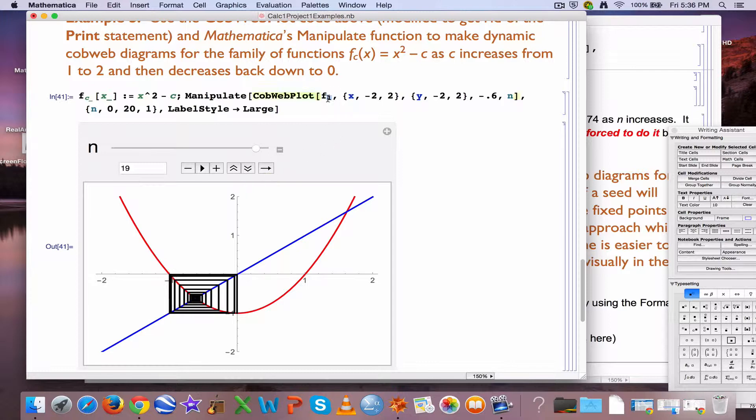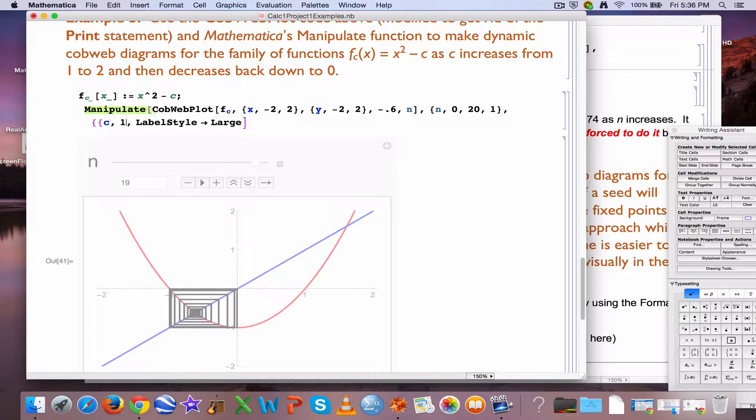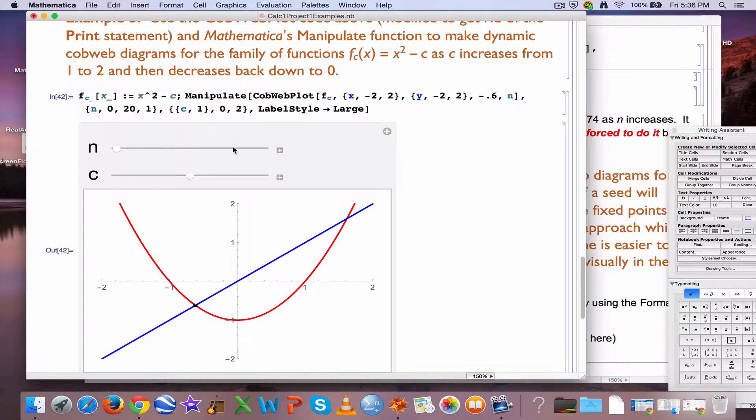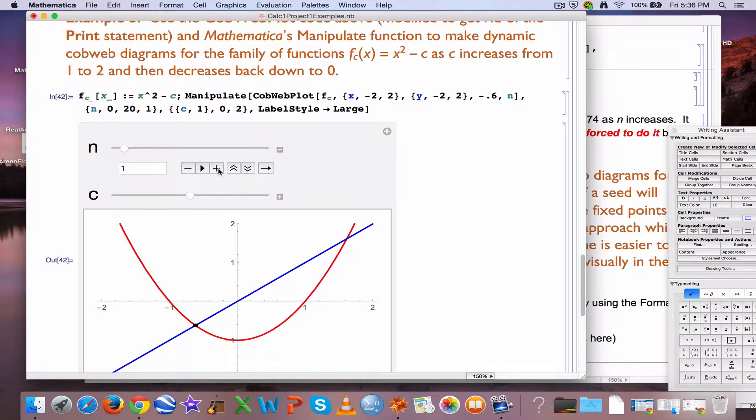But now I want to animate the subscript there, the c. I want to make that another animation parameter. And here is syntax that will start c at a value of 1, let it go as low as 0 and as high as 2. So, for any fixed value of c, like 1, I can animate n and see the same behavior as before.